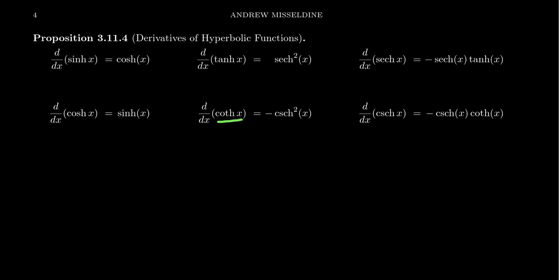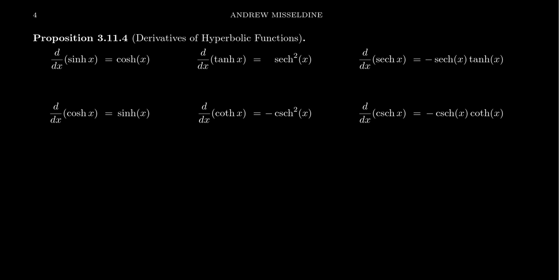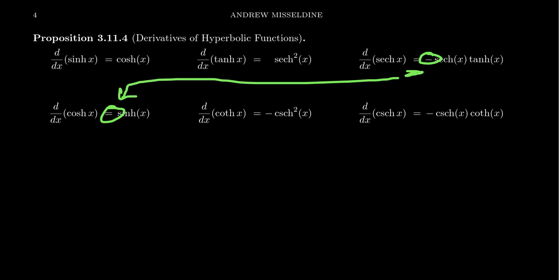When you take the derivative of hyperbolic cotangent, you get negative hyperbolic cosecant squared. When you take the derivative of hyperbolic secant, you get negative hyperbolic secant times hyperbolic tangent — watch out for that extra negative sign. When you take the derivative of hyperbolic cosecant, you get negative hyperbolic cosecant times hyperbolic cotangent. So basically we just add H's everywhere. If you can remember that the derivative of cosh is sinh, you'll be just fine. Calculating derivatives of hyperbolic functions is very similar to trigonometric functions — just be cautious of that negative sign.